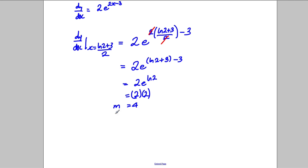So we have our gradient, m, that's our gradient. So we use y subtract y1 is m, x subtract x1, and so we say y subtract 7, the point, so our coordinate, remember, was ln 2, add 3, over 2, and 7. So y subtract 7 is equal to 4, x subtract ln 2, add 3, all divided by 2, like that.